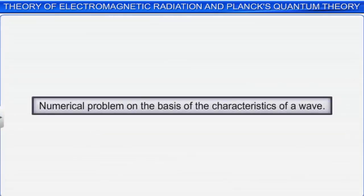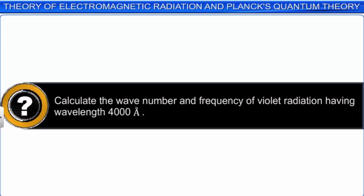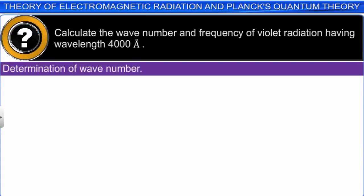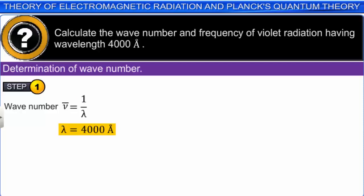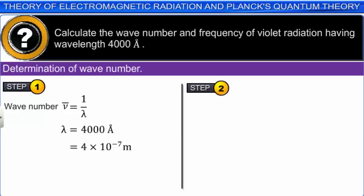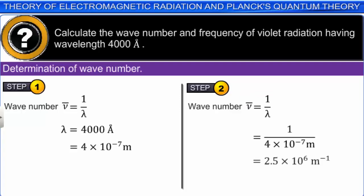Let us solve a numerical problem on the characteristics of a wave. Calculate the wave number and frequency of violet radiation having wavelength 4000 angstrom. First, to calculate the wave number: nu-bar = 1/λ. The given lambda is 4000 angstroms = 4 × 10⁻⁷ meters. Substituting, we get nu-bar = 2.5 × 10⁶ per meter, or 2.5 × 10⁴ per centimeter. Now, to calculate the frequency: nu = c/λ. Substituting λ = 4 × 10⁻⁷ m and c = 3 × 10⁸ m/s, we get 7.5 × 10¹⁴ per second.